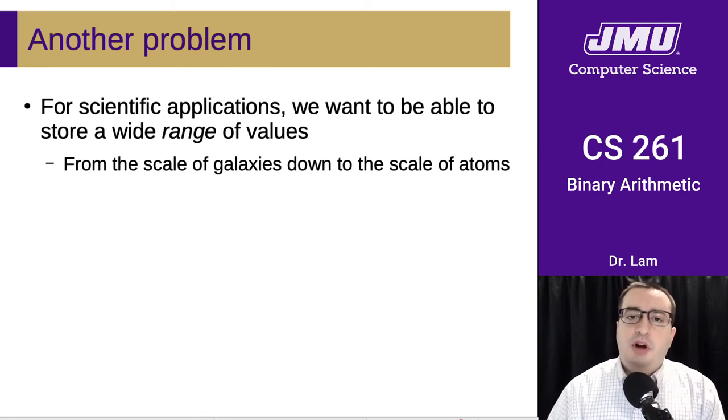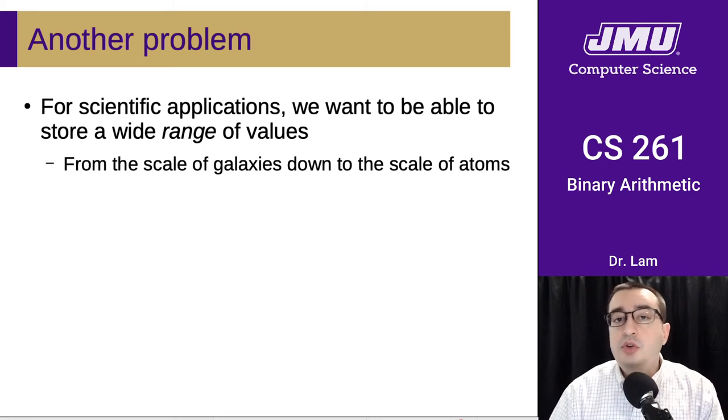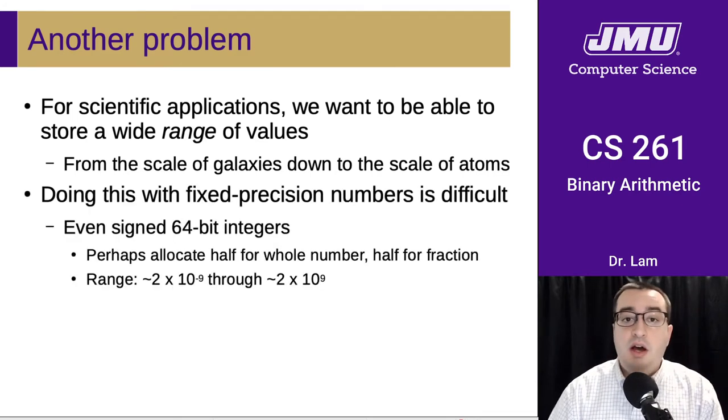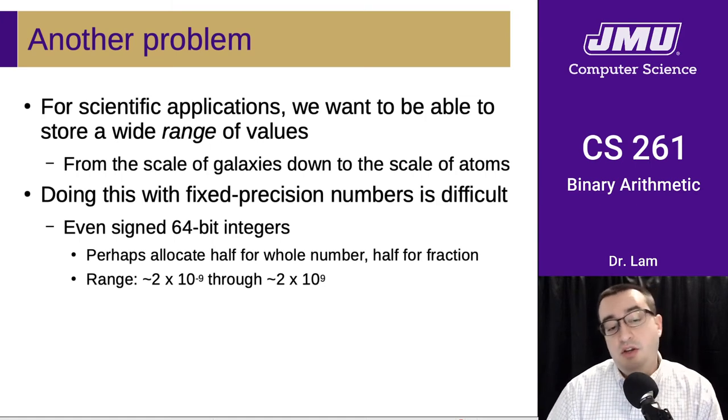However, another problem is that for scientific applications, we really want to be able to store a huge range of values. So the same physics simulation might be working with values on the scale of galaxies all the way down to the scale of atoms. And doing this with fixed precision numbers is very difficult. Even with signed 64-bit integers, even if we perhaps allocated half for the whole number and half for the fraction, we still have a range that's actually relatively small.